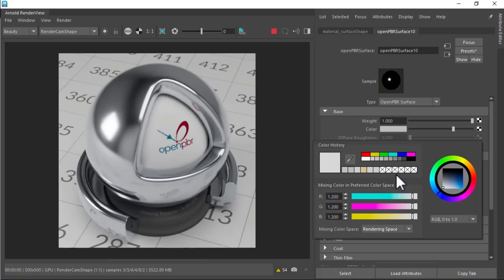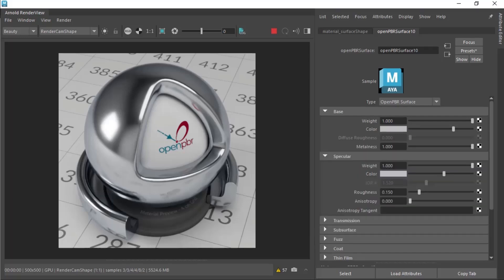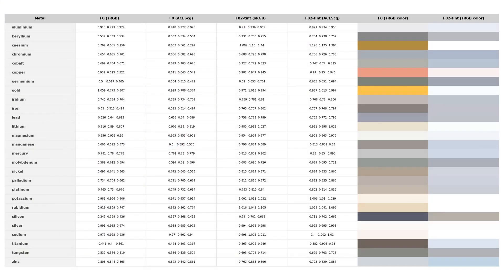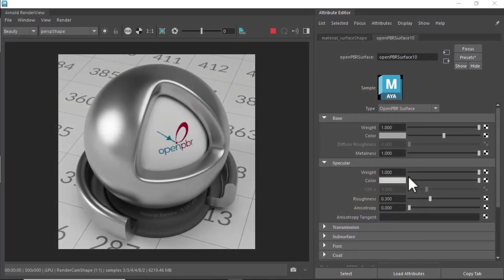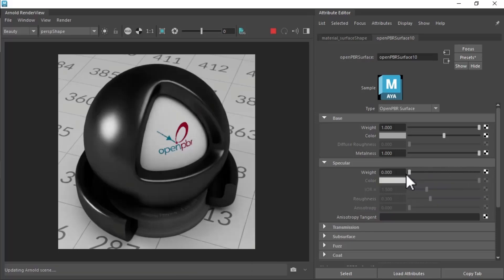The specular color separately controls the color seen near the silhouette of metals, often referred to as the F82 color, meaning the Fresnel reflectance viewed near grazing angles. In real metals, the F82 color tends to darken or change hue. For example, as can be seen here, chrome has a slightly blue tint at the edge. The F0 and F82 values are available in the Arnold documentation for a suite of commonly used metals. The specular weight functions as an overall multiplier of the strength of the metallic reflection.